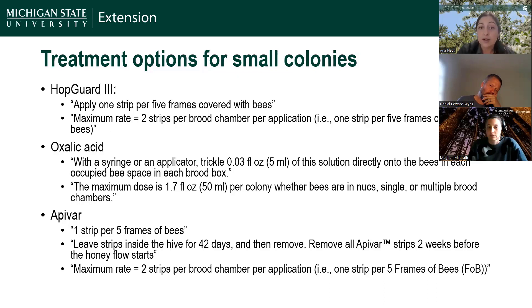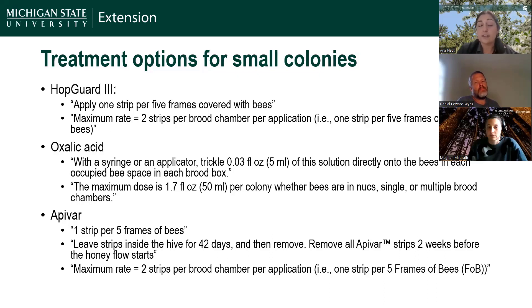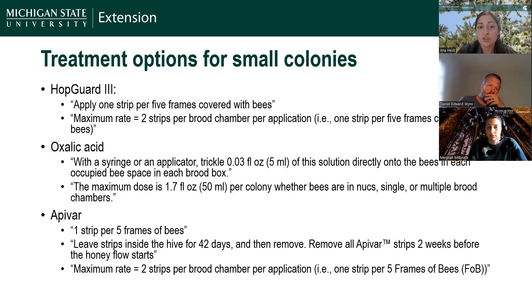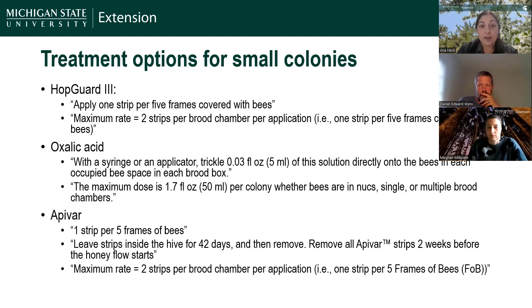To know more, use the Honey Bee Health Coalition's guide and read the full label so you know specific restrictions. Another common treatment situation this time of year is small colonies — packages, nucleus colonies, or small splits. Some treatments are better for larger, stronger colonies, so treatment options for small colonies include HopGuard 3 at one strip per five frames covered with bees; oxalic acid at five milliliters of solution mixed with sugar syrup between each seam of bees in the brood box, up to 50 milliliters; and ApiVar at one strip per five frames of bees. Read the label for full application instructions.